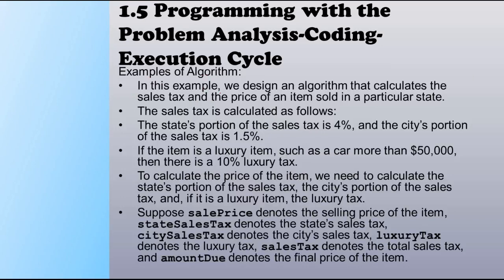The second example of an algorithm: we design an algorithm that calculates the sales tax and the price of an item sold in a particular state. The state's portion of the sales tax is 4%, the city's portion is 1.5%. If the item is a luxury item such as a car costing more than $50,000, then there is an additional 10% luxury tax.